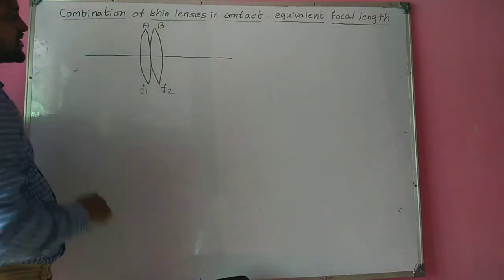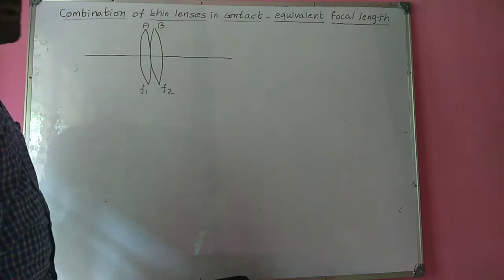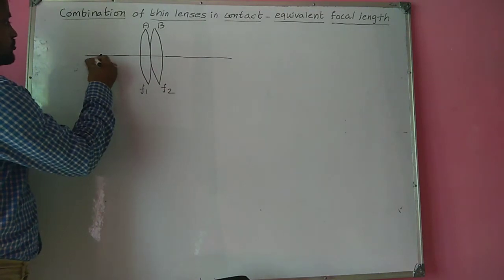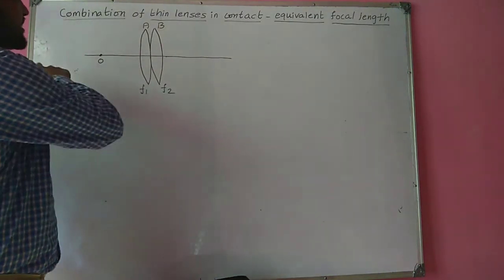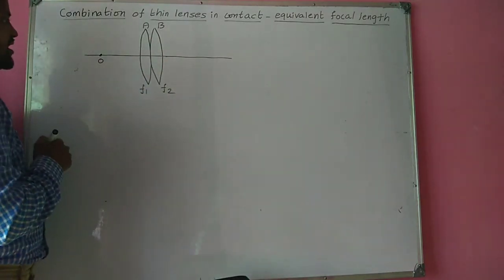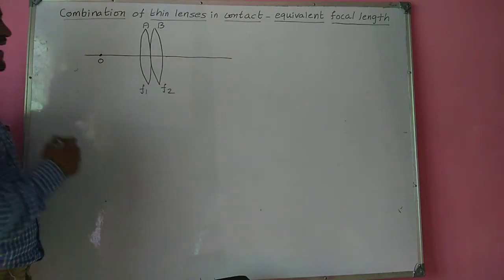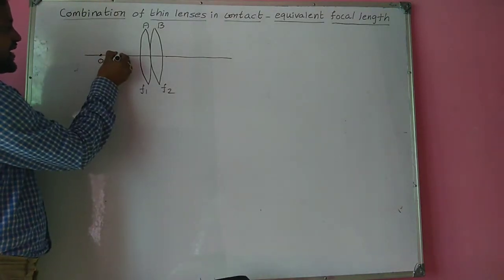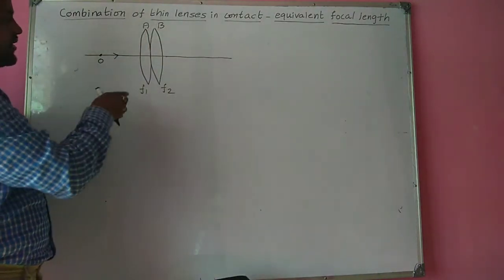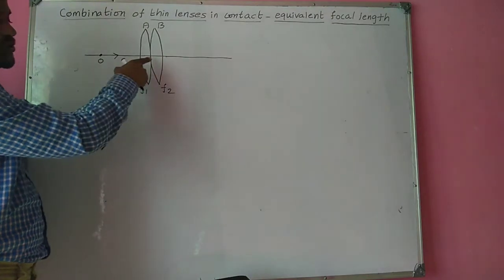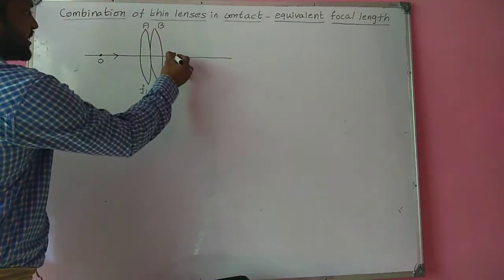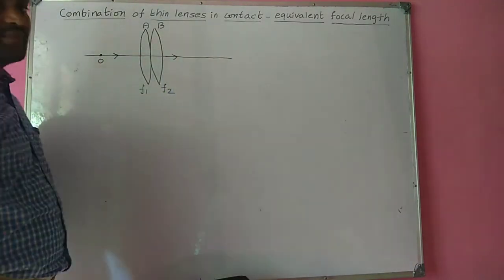Let us consider an object O placed on the principal axis. A light ray from this object travelling along the principal axis passes through the common optic centre, so it does not deviate — it travels in the same direction.